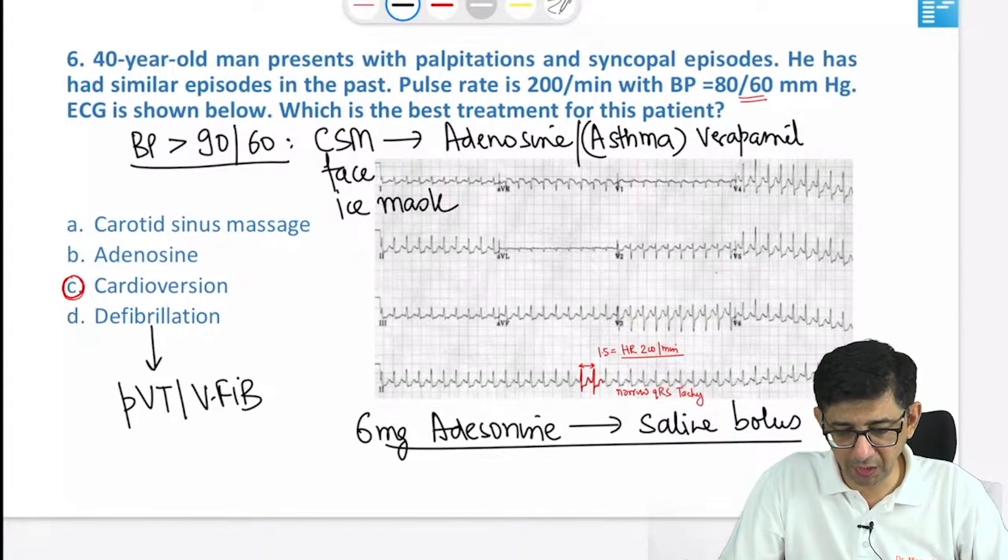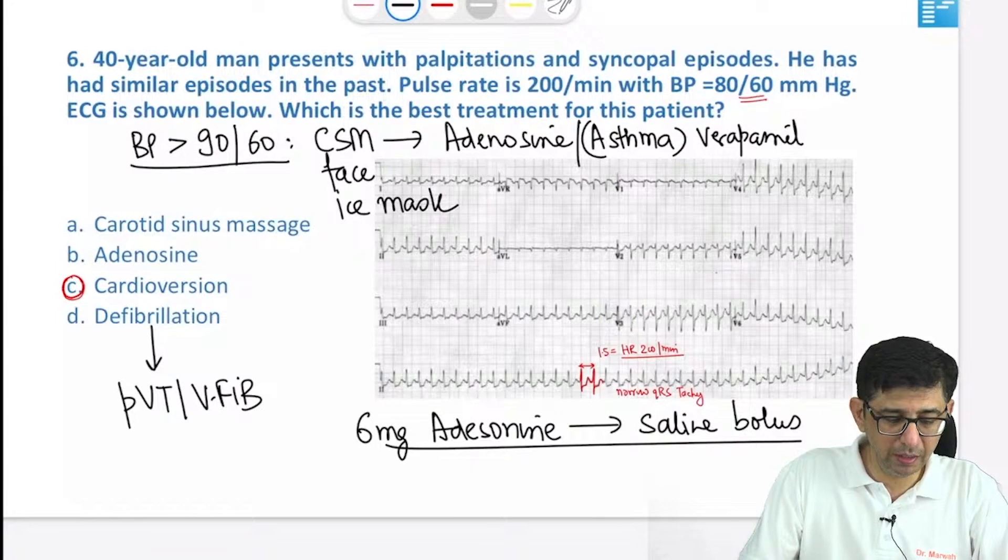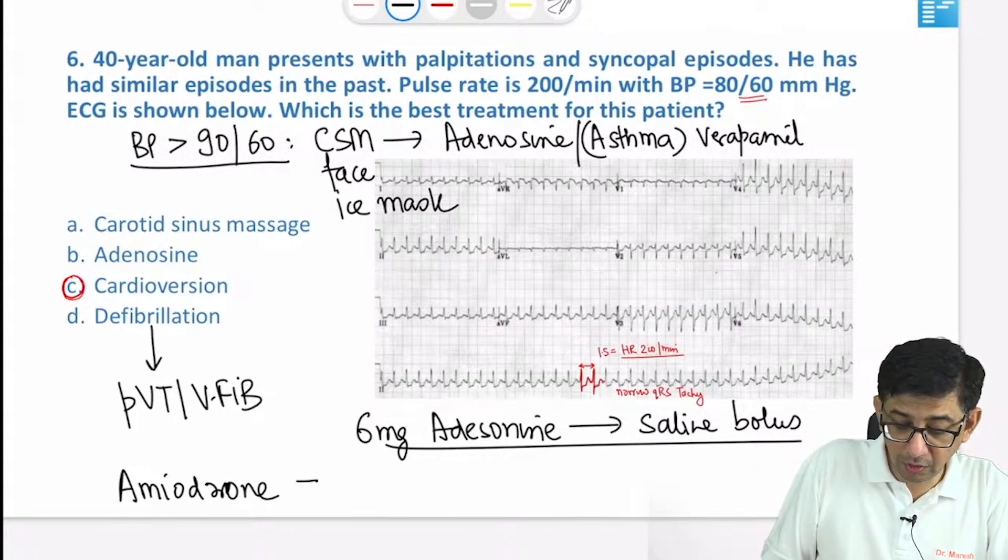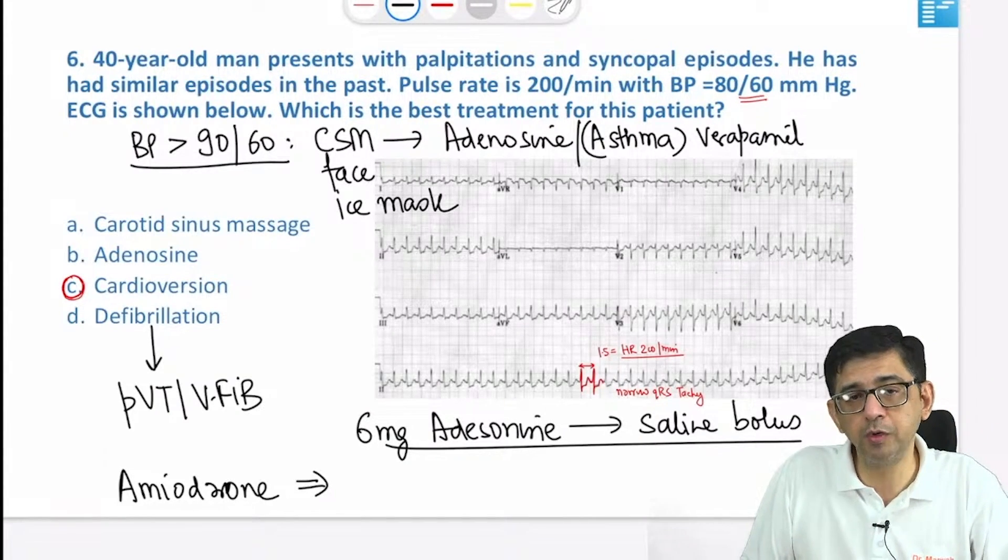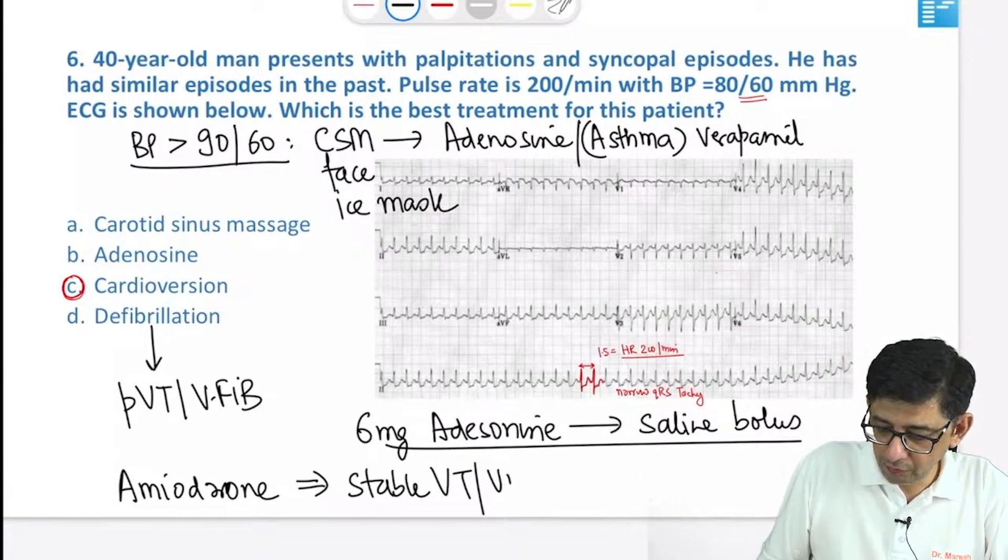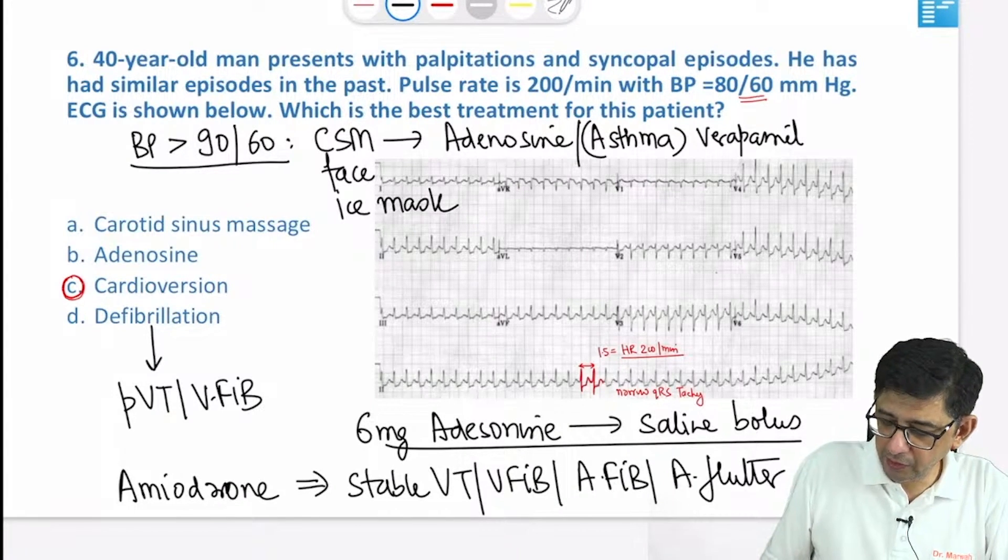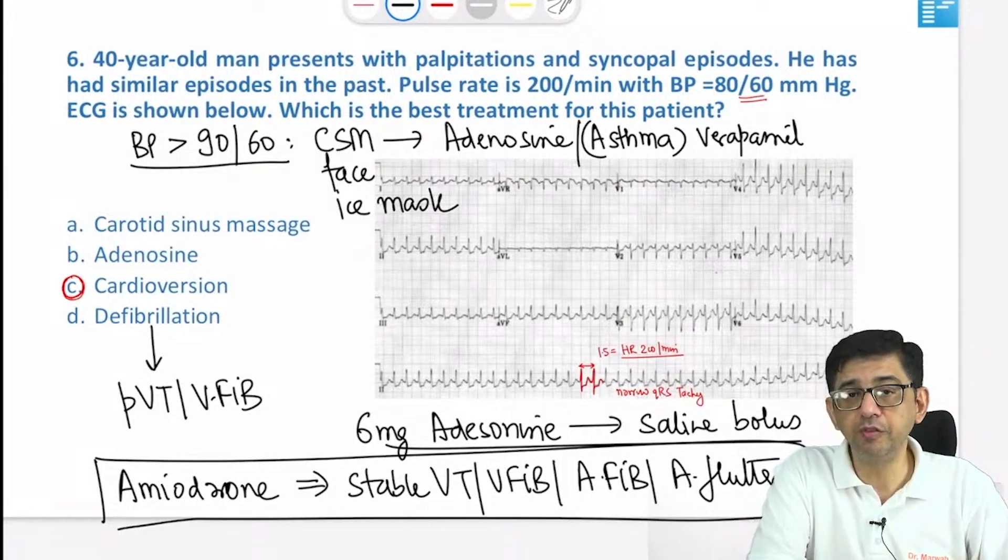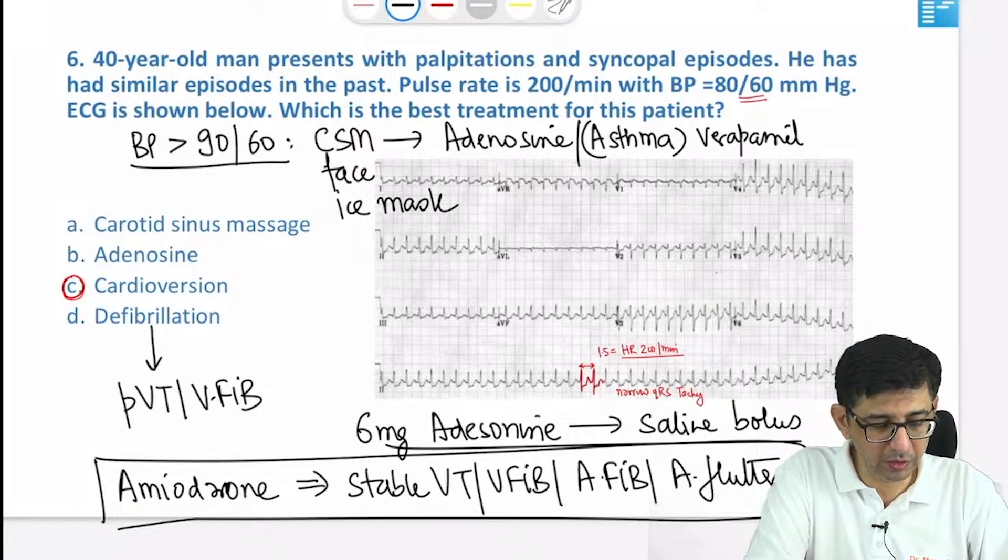When will we give amiodarone? Amiodarone is given in stable ventricular tachycardia, ventricular fibrillation, atrial fibrillation, and atrial flutter. I would request you to listen to my data in the rapid revision part where the usage of amiodarone has been discussed for arrhythmias: VT, V-fib, A-fib, and atrial flutter are the situations.